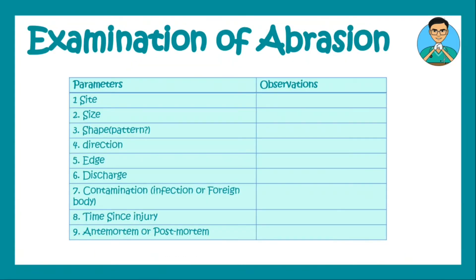Abrasion examination involves parameters such as site, size, shape — that means pattern of the abrasion — then direction of the force application, edges of the abrasion, any discharge from the abrasion, contamination of the wound by infection or foreign body, time since injury, and whether the abrasion was caused antemortem or postmortem. Direction of force application is very important, as is the time since injury and whether it is an antemortem abrasion or a postmortem abrasion.